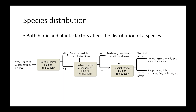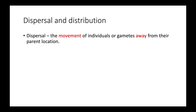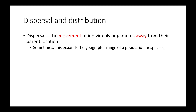When thinking about the distribution of species, there are a couple of terms you need to know. One of those terms is dispersal, which is the movement of individuals or gametes away from their parent location. For example, if people from a Texas population suddenly spread out to Oklahoma, Louisiana, New Mexico, and other states, that would be an example of dispersal because members of the population are moving to a different location. Sometimes dispersal will expand the geographic range of a population or species, but that's not always the case.